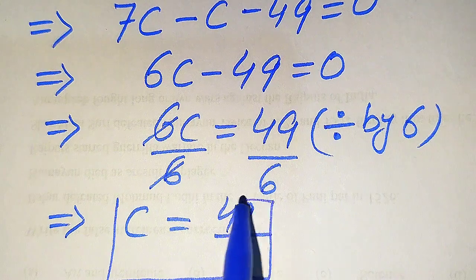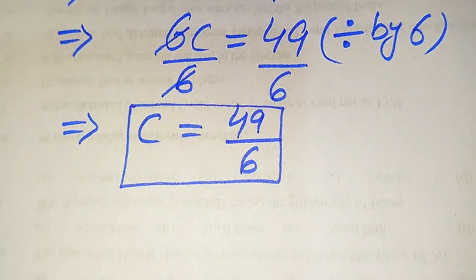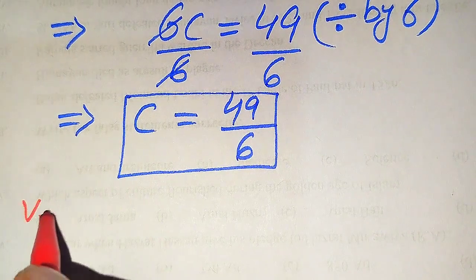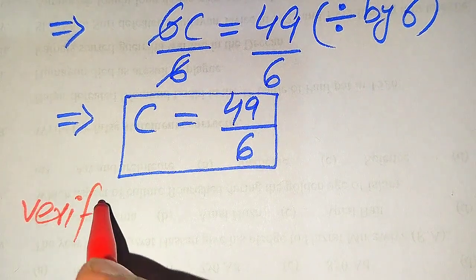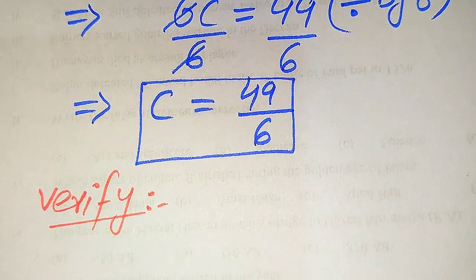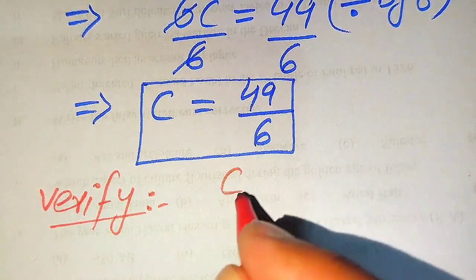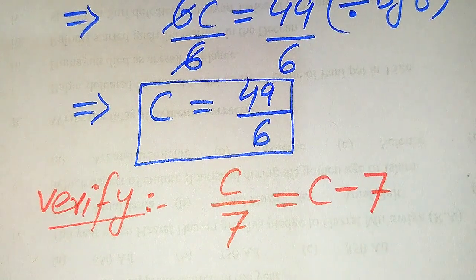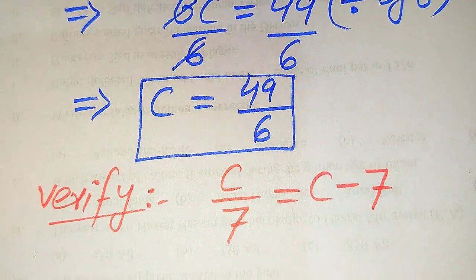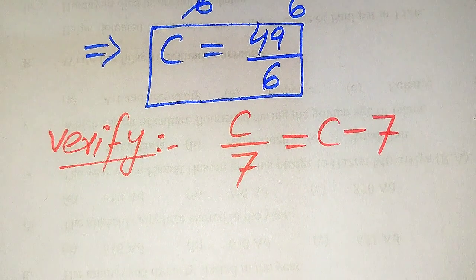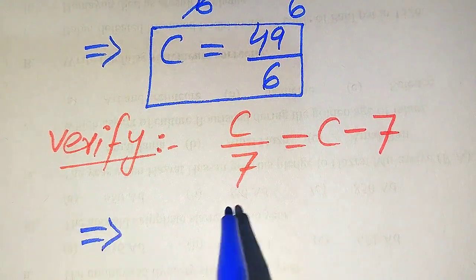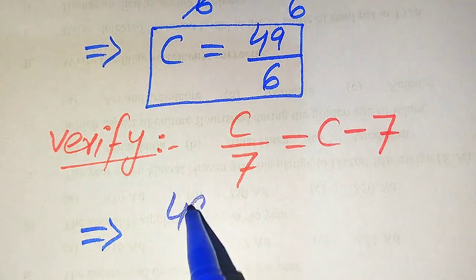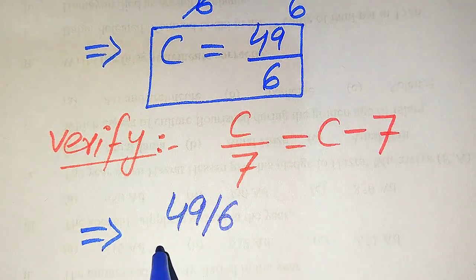We get C equals 49/6 from Method 1. Now we verify whether this value is a solution or an extraneous root. We copy down the given equation: C over 7 equals C minus 7, and substitute C equals 49/6 on both sides.